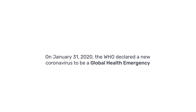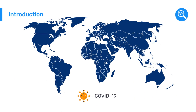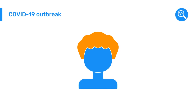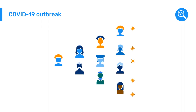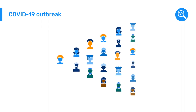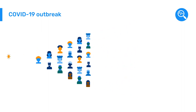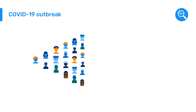On January 31, 2020, the WHO declared a new coronavirus to be a global health emergency. Since then, we have all witnessed the spread of the virus and the evolution of the COVID-19 pandemic. In countries around the world, health systems needed to react quickly to assess and monitor the disease outbreak and to try to control its spread. This kind of public health activity is known as disease surveillance.